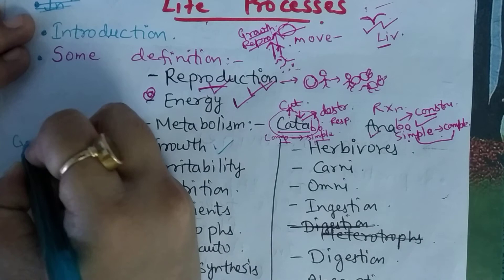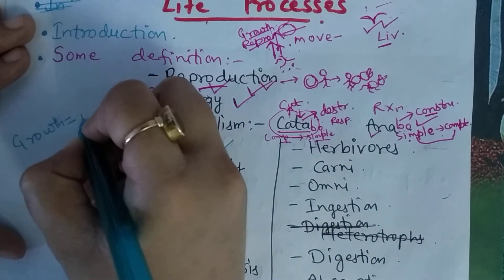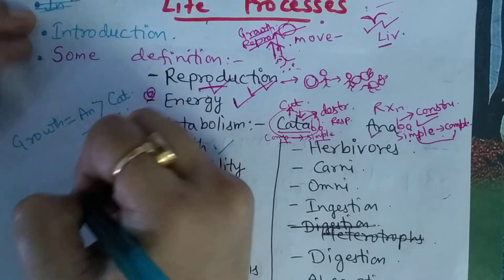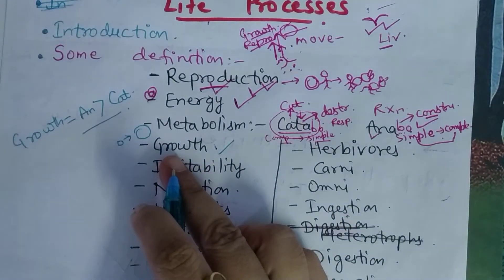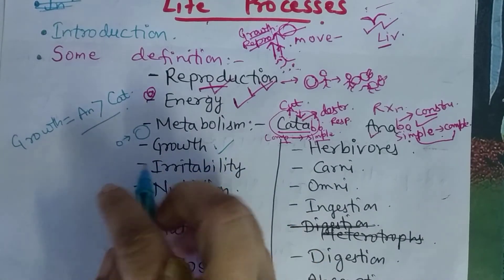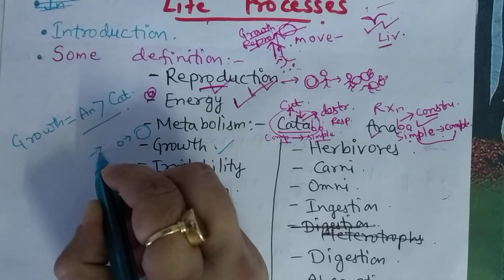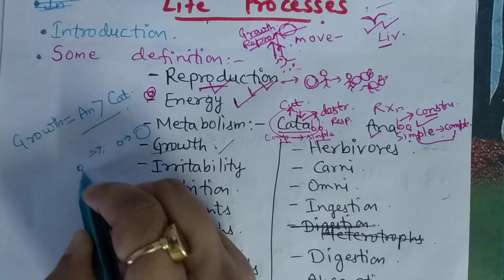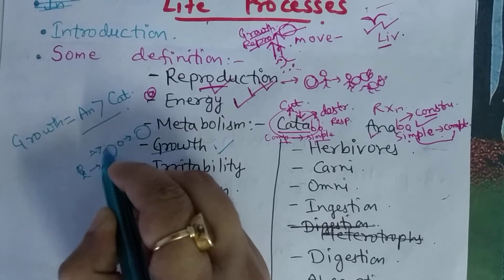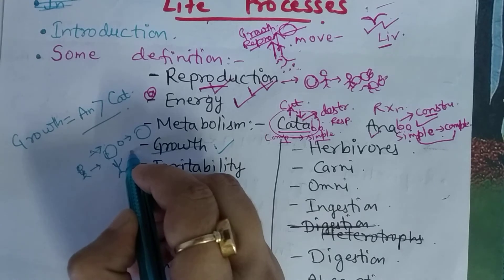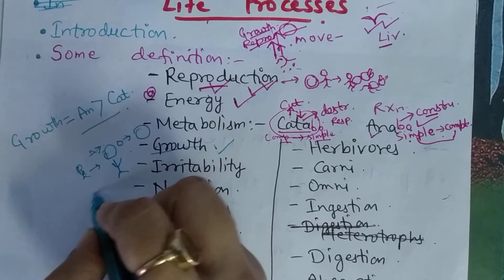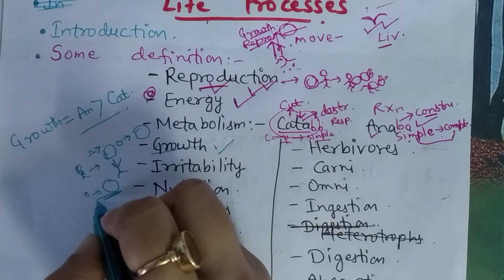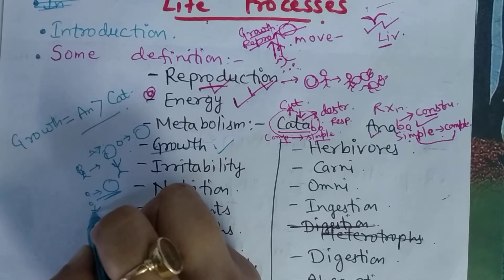We make an equation for growth: growth equals anabolism greater than catabolism. When anabolism is greater than catabolism, then growth occurs. Like you see any small baby - you were also once a baby. You did growth, development, and became a mature person. So what happened was growth occurred - in cells, in tissues, in organs, in organ systems. When a cell grows, how does it do so? It's not that one cell just becomes bigger - that will cause cancer. The cell, to grow, will divide. From one cell it will make two cells, from two it will make four. When cell division happens, our growth occurs.